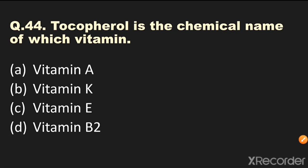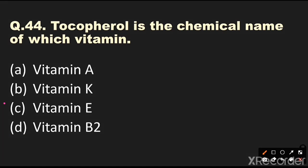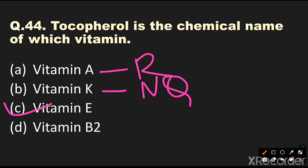Question number 44: Tocopherol is the chemical name of which vitamin? Options are vitamin A, vitamin K, vitamin E, or vitamin B2. The answer is vitamin E. Tocopherol is the chemical name of vitamin E. The chemical name of vitamin A is retinol, vitamin K is naphthoquinone, and vitamin B2 is riboflavin.